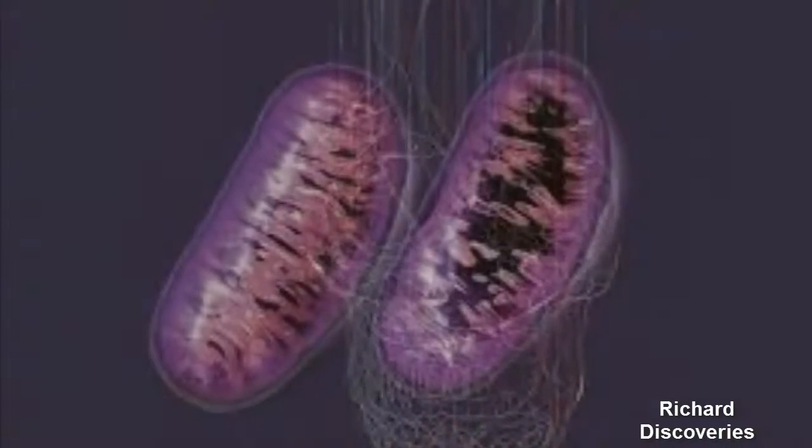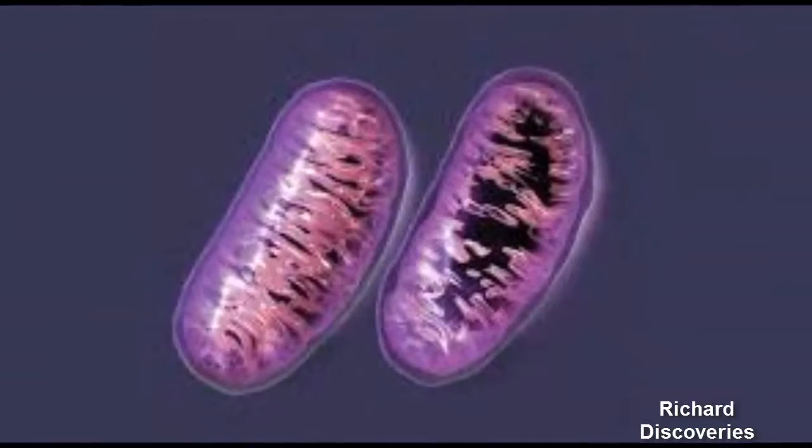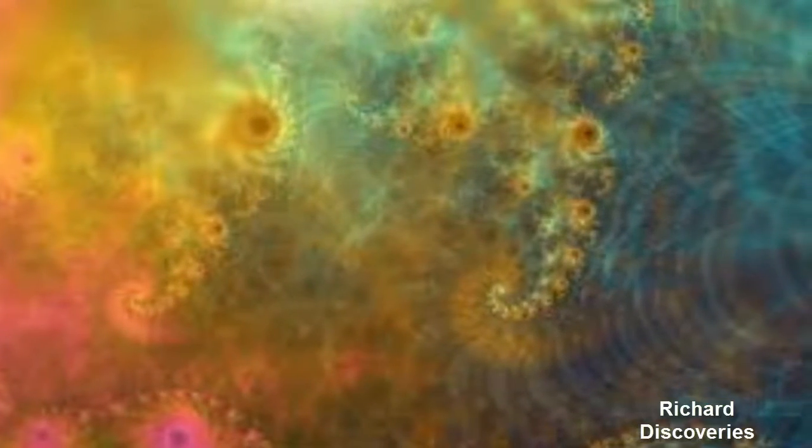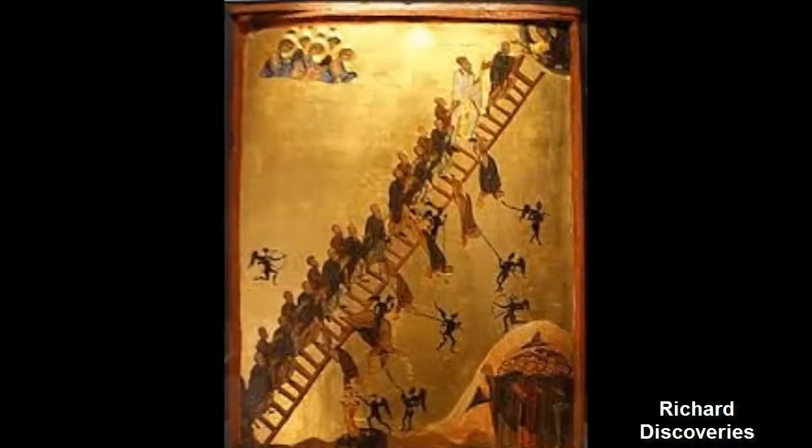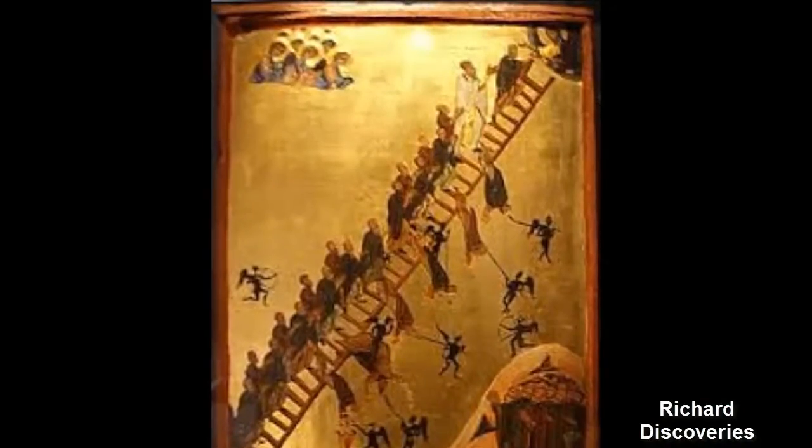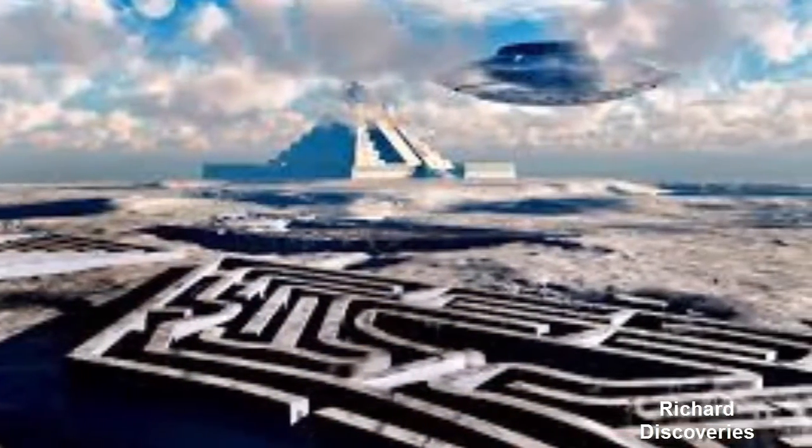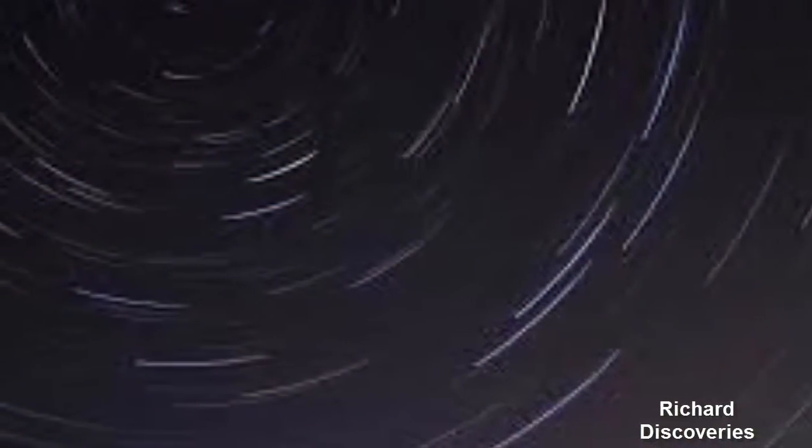It's intriguing to note that Whitley Strieber, the author of the phenomenally successful 1987 book Communion, has suggested that the so-called black-eyed, large-headed greys are not all they appear to be. They may be far more, or paradoxically, they just might be far less.